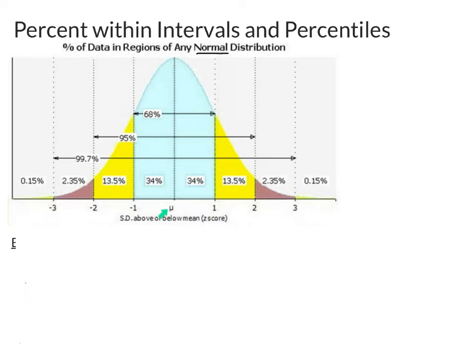What you have is your mu here, which is the mean, and then you have the 1, 2, and 3s, and what that means is your standard deviation above or below that mean. So you do need to know what your mean is, and you have to know what the standard deviation is to figure out where all these values are.